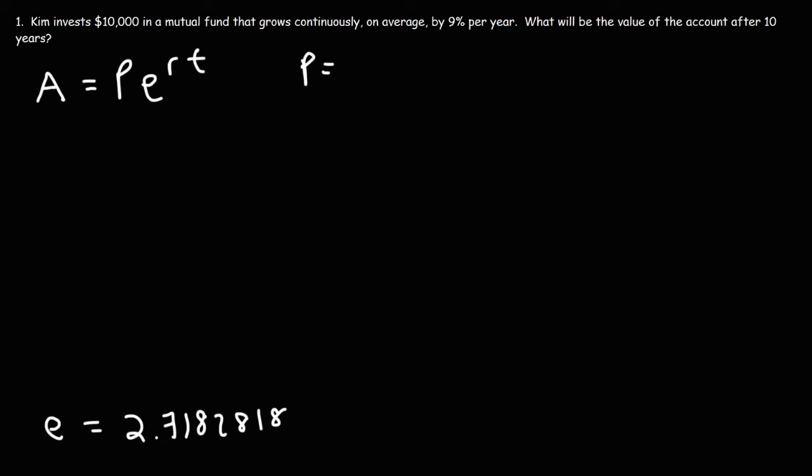So let's write down what we know. The amount invested or the P value is $10,000. The interest rate is 9% but as a decimal we need to divide that by 9, I mean we need to divide 9 by 100. So the value for R that we're going to plug in is 0.09. And we want to determine the value of the account 10 years later. So T is 10.